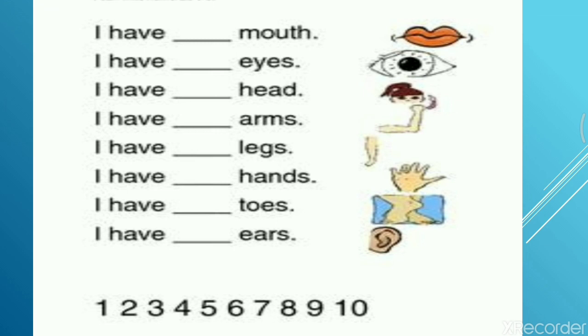How many mouths do you have? You have one mouth. So, you have to fill here one. I have one mouth. I have dash eyes. How many eyes do you have? You have two eyes. So, you have to fill here two.